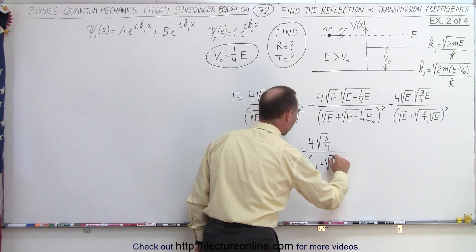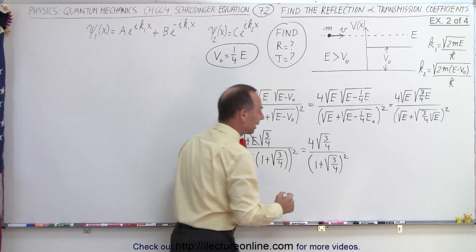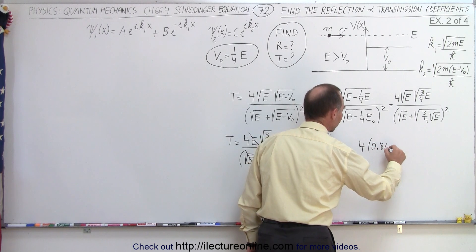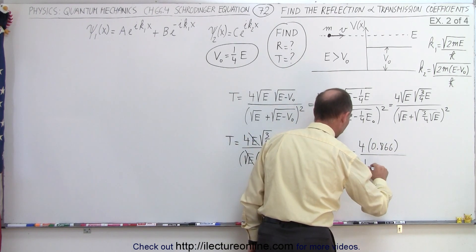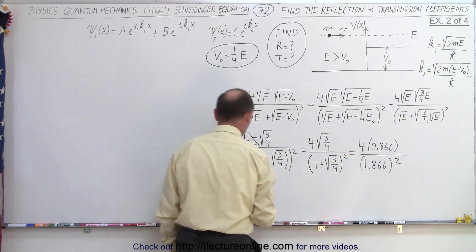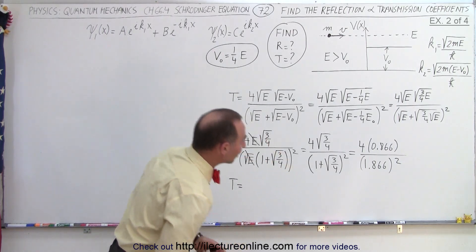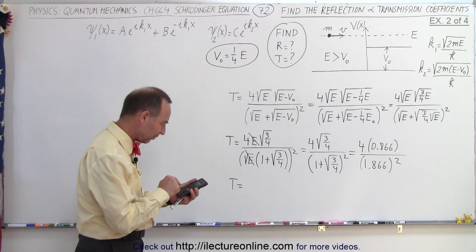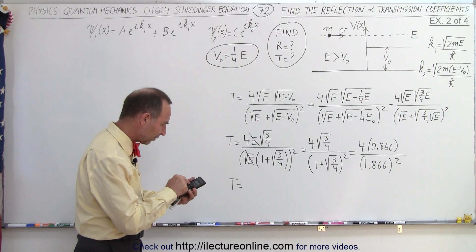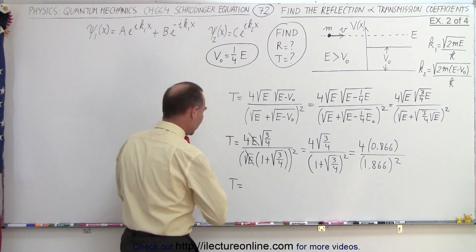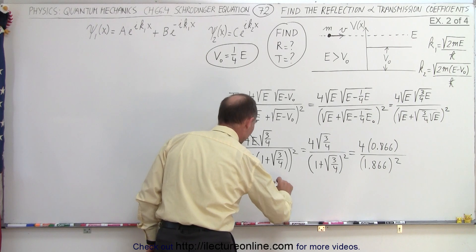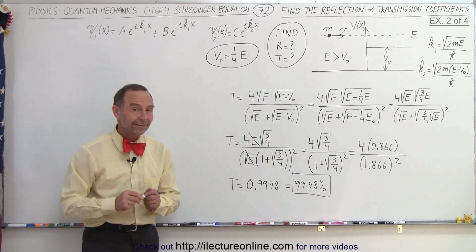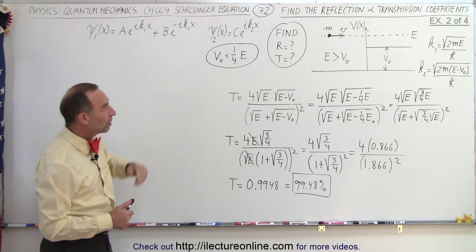In the denominator would be 1 plus the square root of 3/4, quantity squared. Now we recall from the previous video that the square root of 3/4 is 0.866, so this is 4 times 0.866, divided by 1 plus that, which would be 1.866, quantity squared. With the calculator: 0.866 times 4, divided by 1.866 squared equals — and sure enough, we end up with 0.9948, which is 99.48% of the particles will be transmitted in the case that the potential of the step is one quarter the energy of the particle.